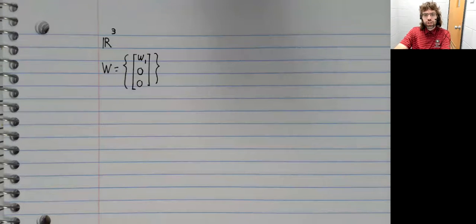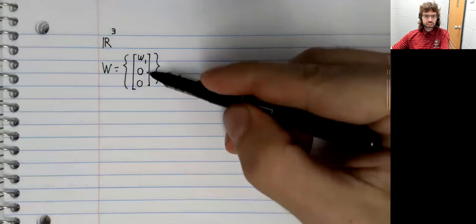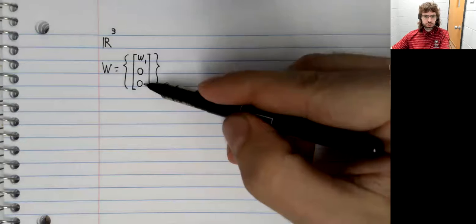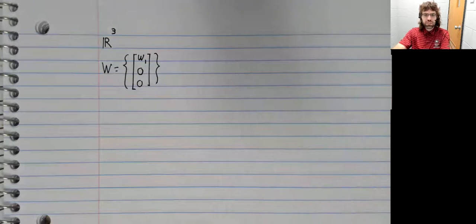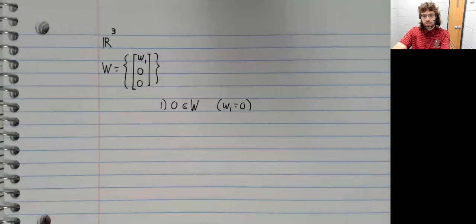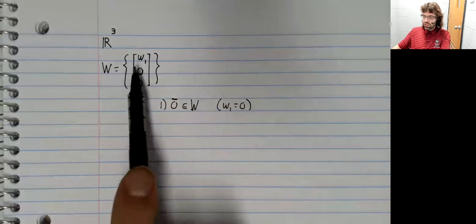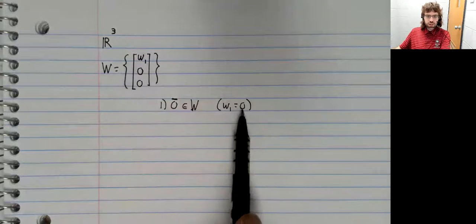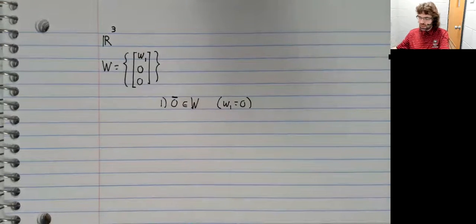Let's look at the vector space R3. And let's look at the vectors in R3 that are zero in the second and third coordinate. This is a subspace. Certainly zero is there. Just set w one equals zero, and you get the zero vector.